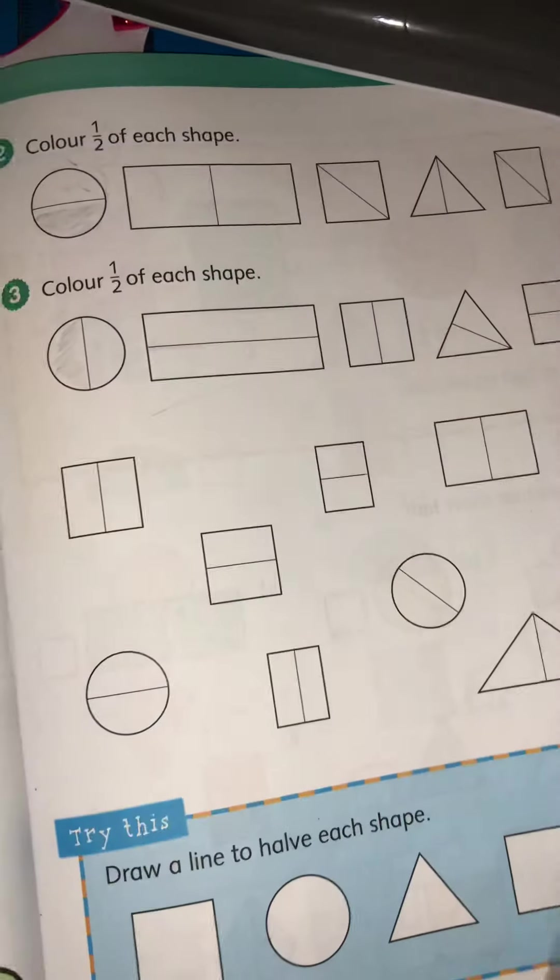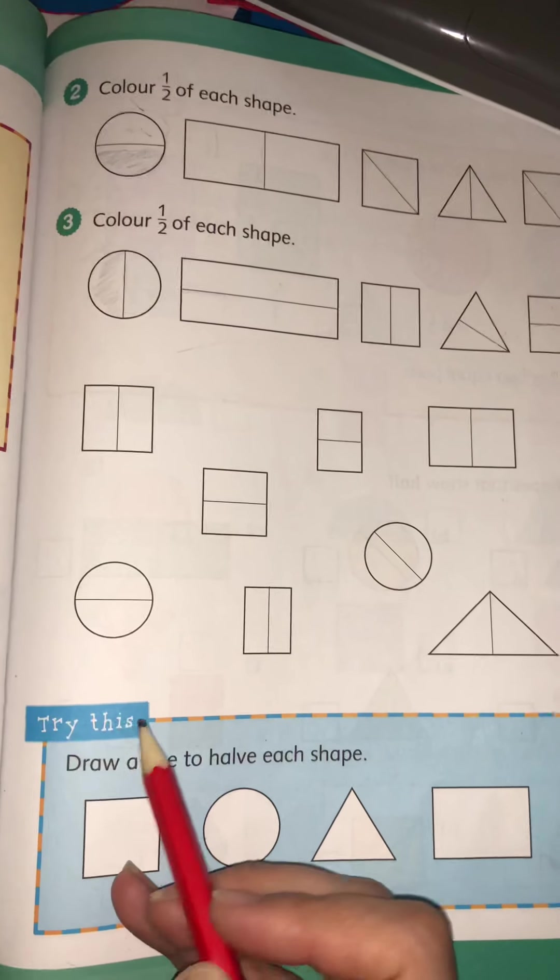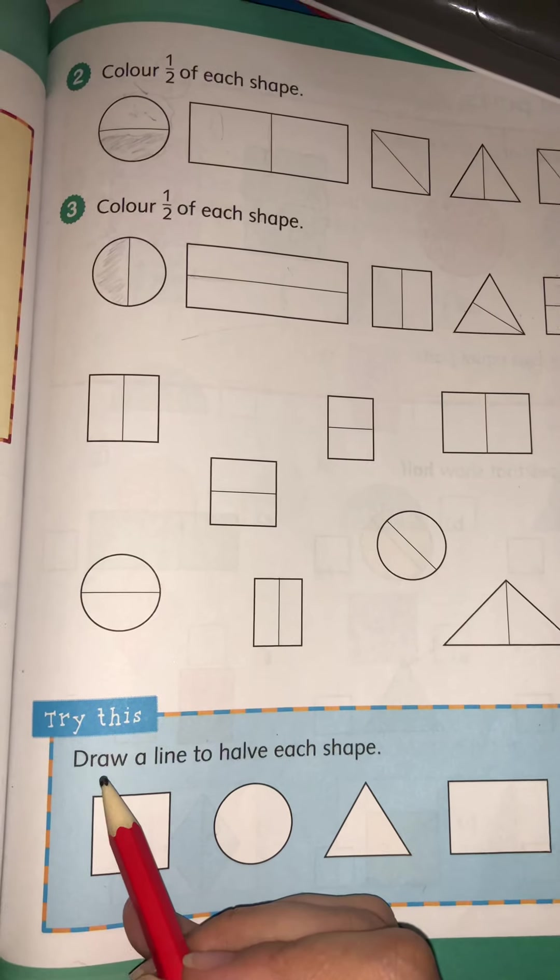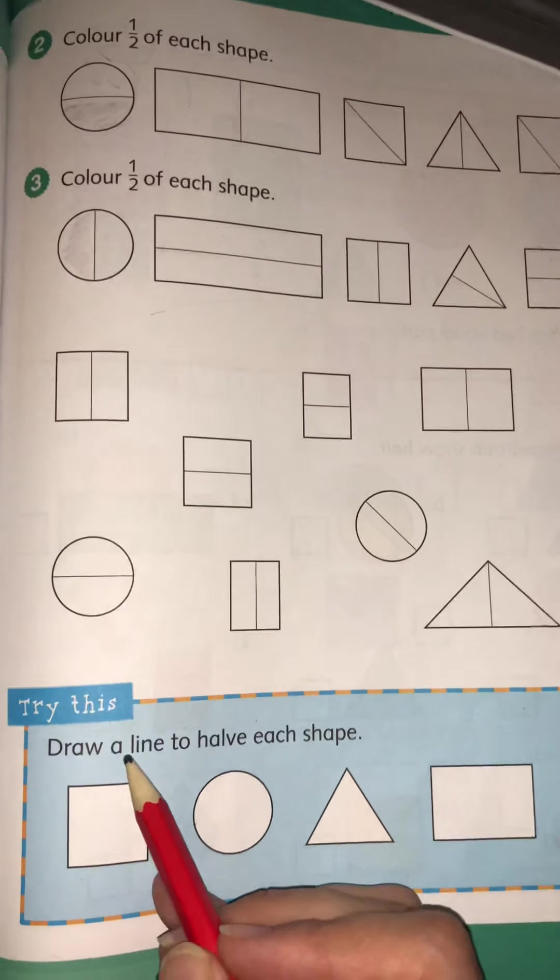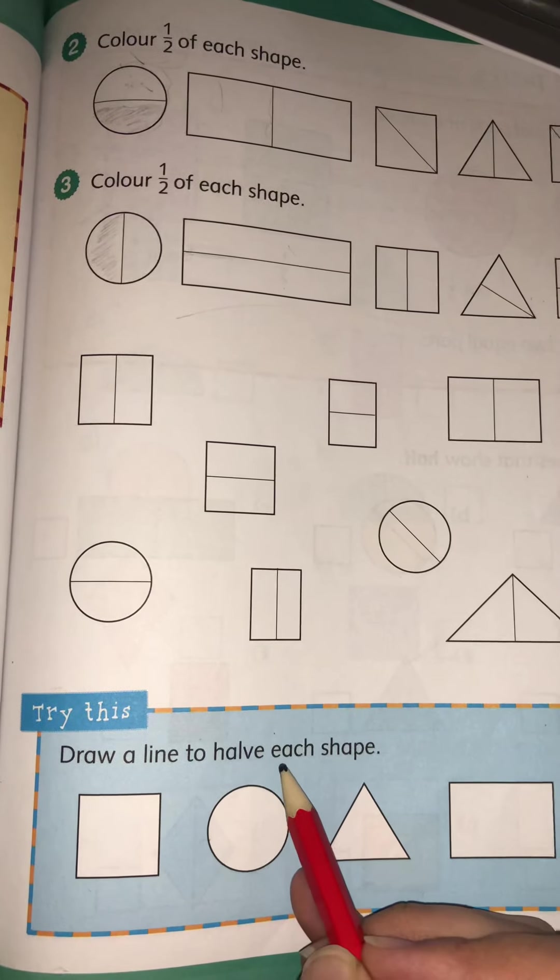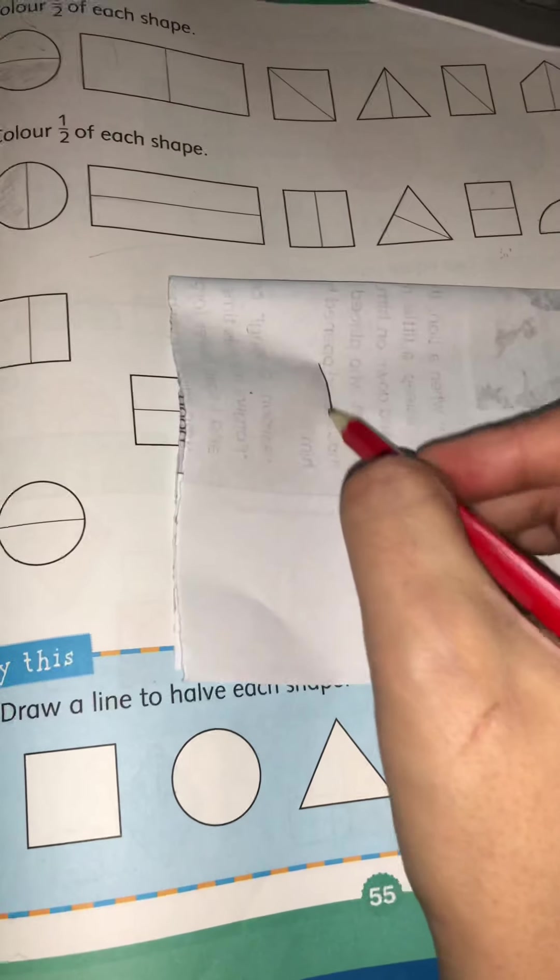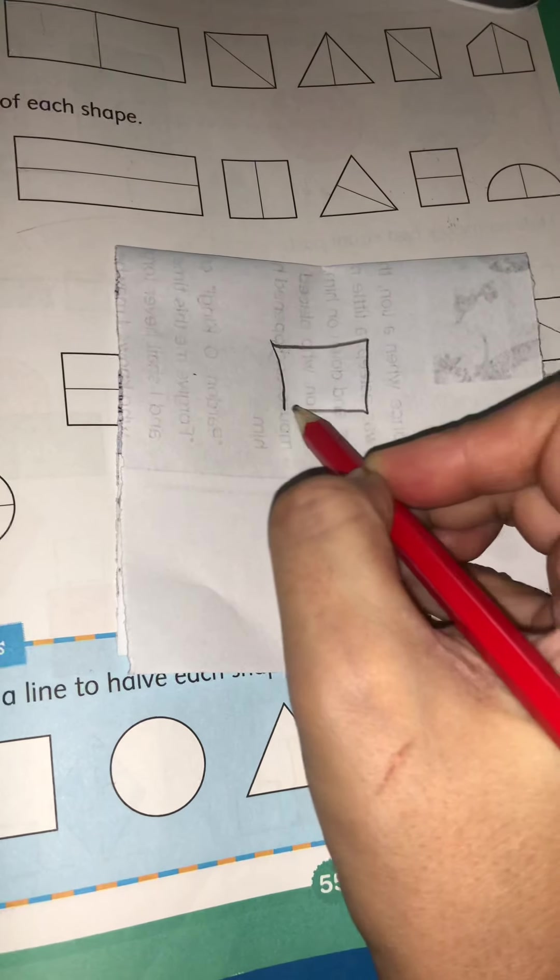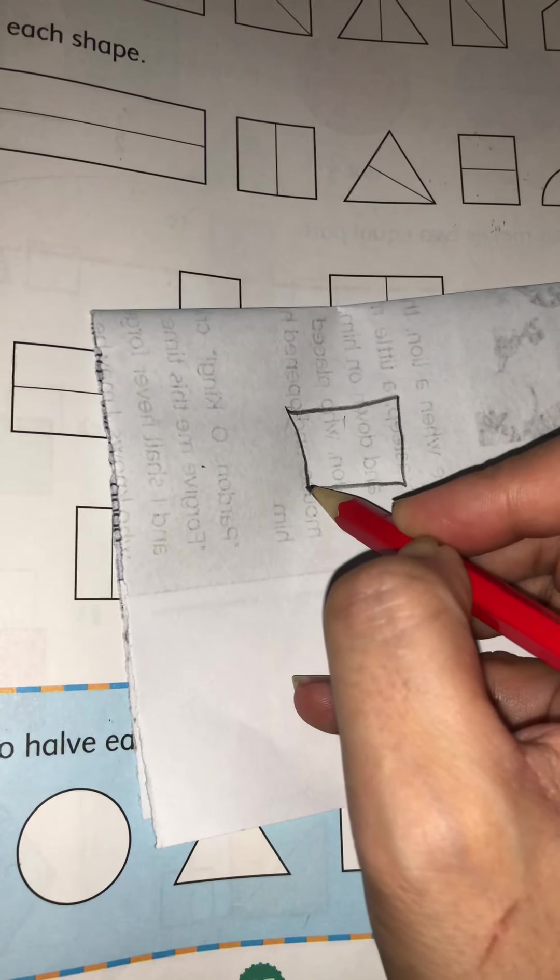Now you have to color the rest of them. Easy peasy, enjoyable work, isn't it? Now try this. Now they want you to half the shapes. Let's read the instructions: Draw a line to half each shape. So we have to half. Now let me tell you a trick. If the shape has corners, then it's very much easier to half it. I mean you can do it like this as well, but it's easier if we do the corners. If we have corners, let's half it from corner to corner.